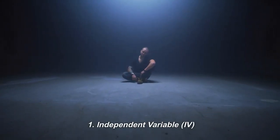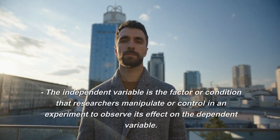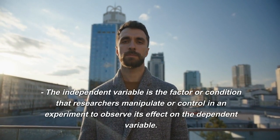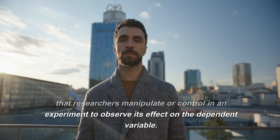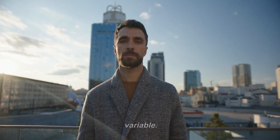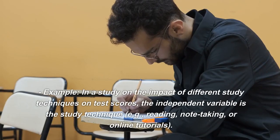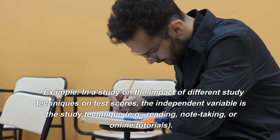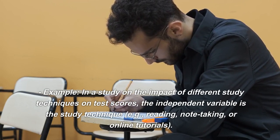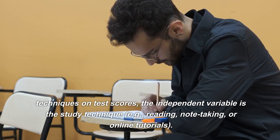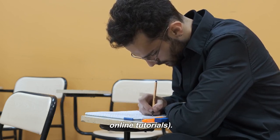Independent variable. The independent variable is the factor or condition that researchers manipulate or control in an experiment to observe its effect on the dependent variable. Example: In a study on the impact of different study techniques on test scores, the independent variable is the study technique, e.g., reading, note-taking, or online tutorials.